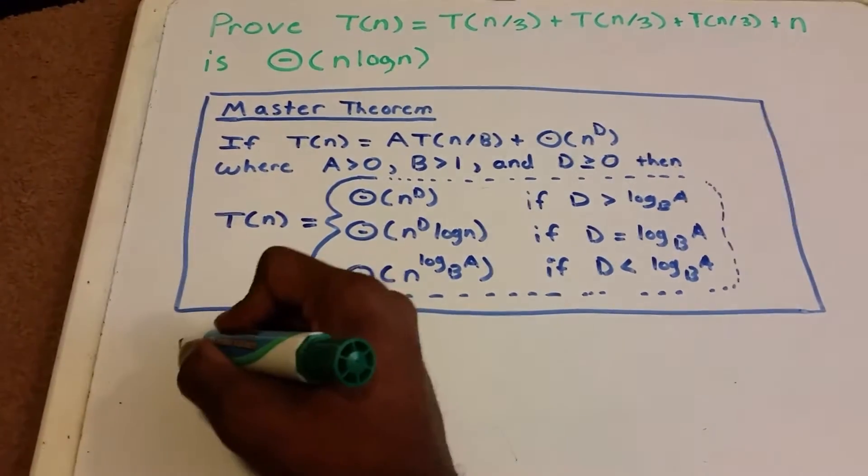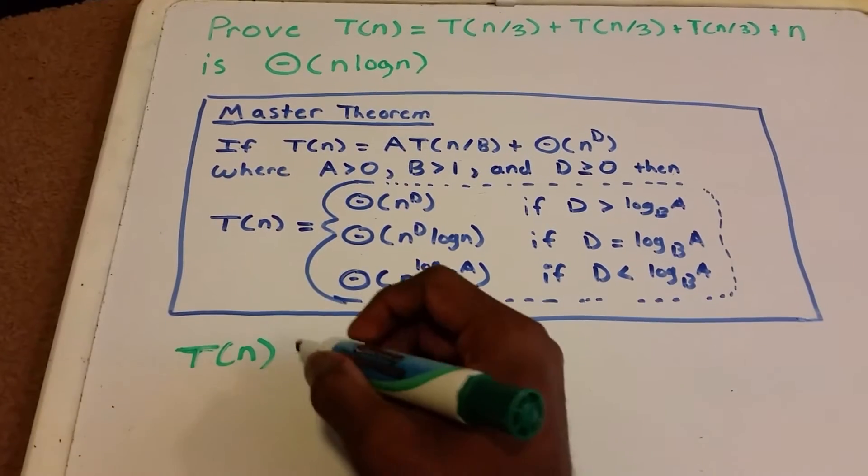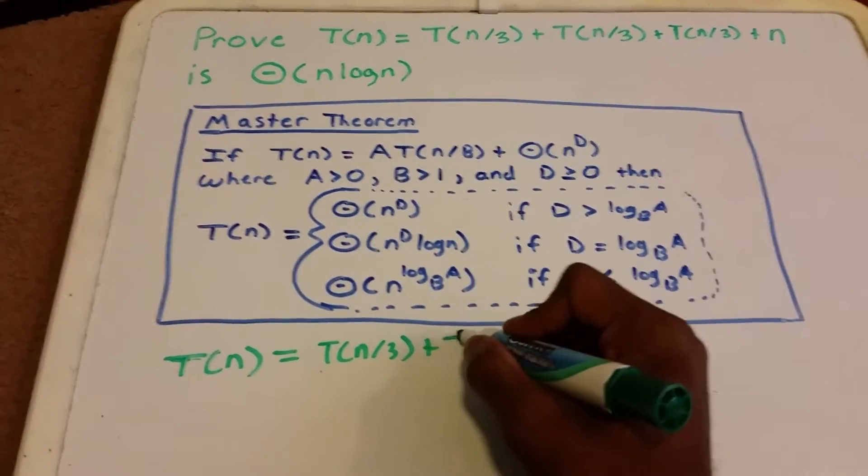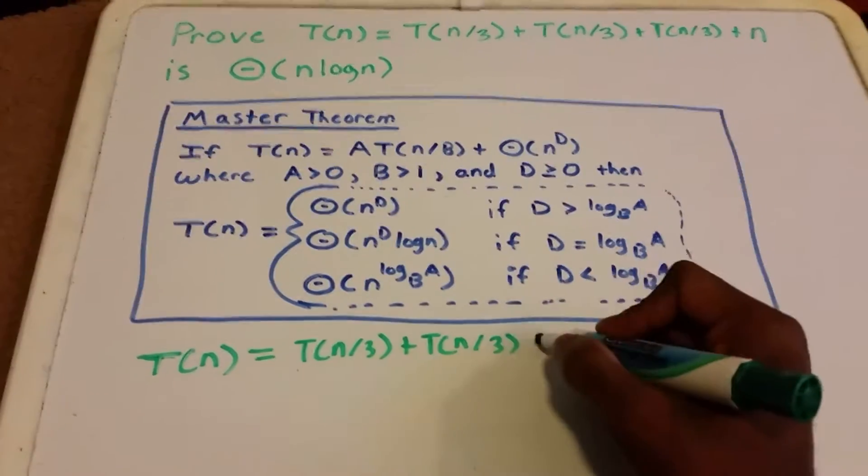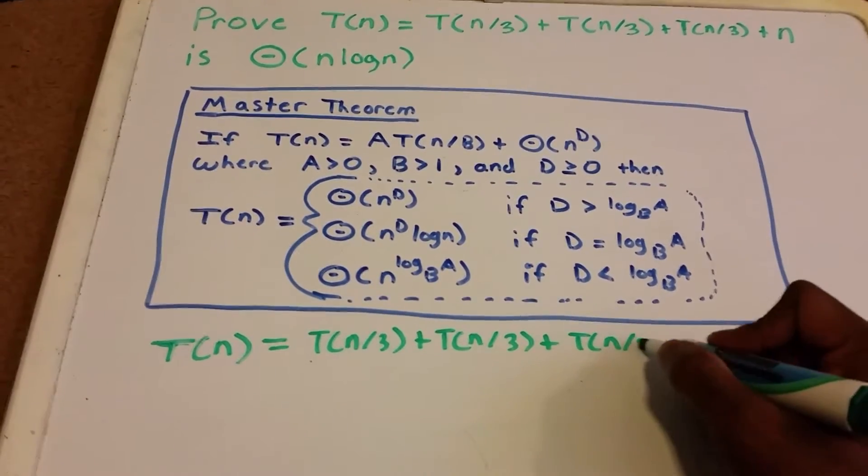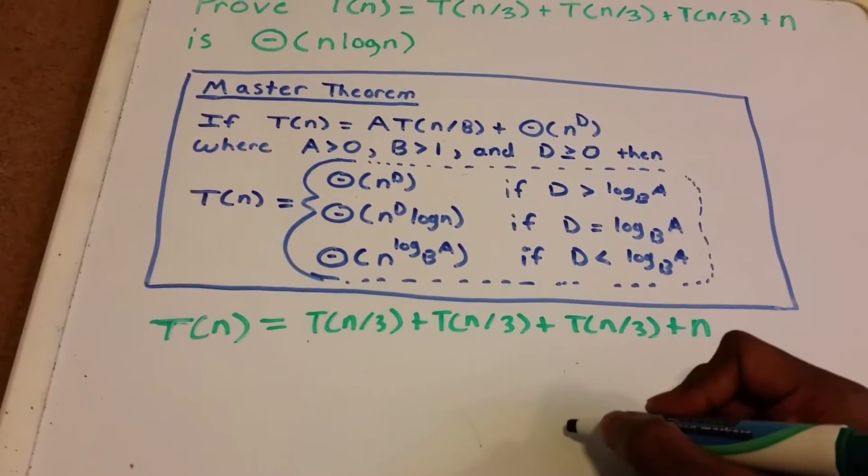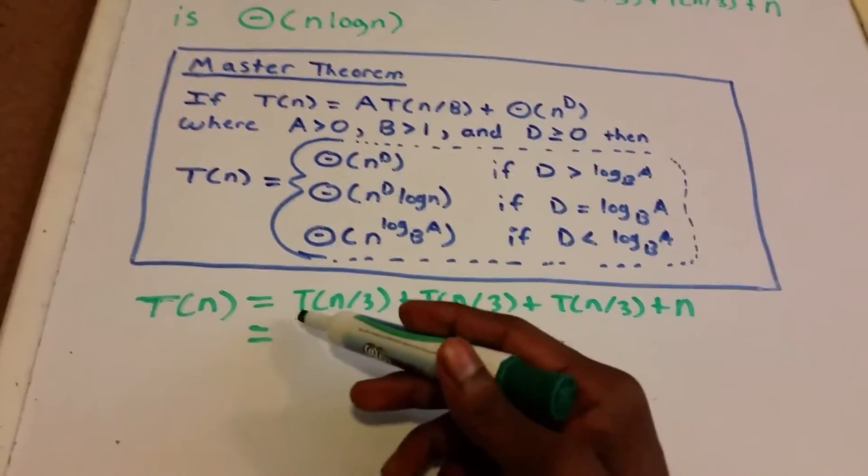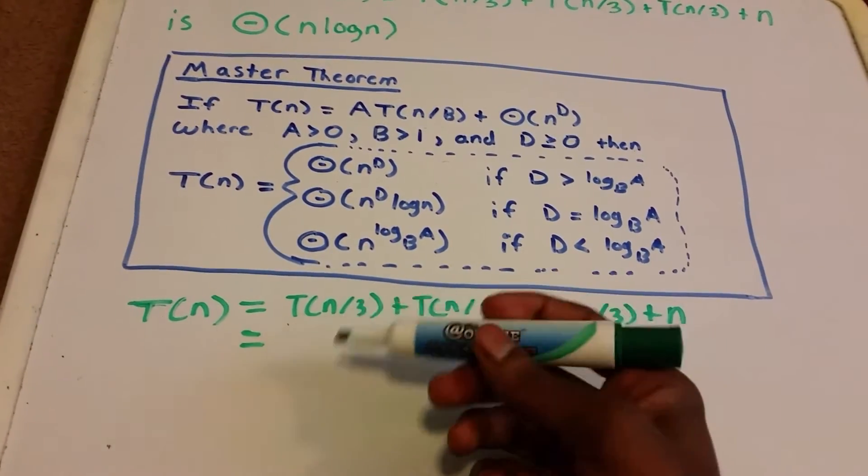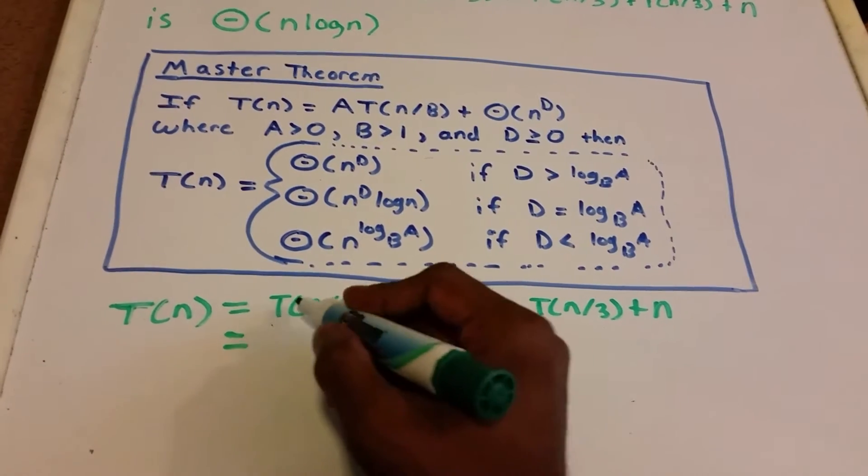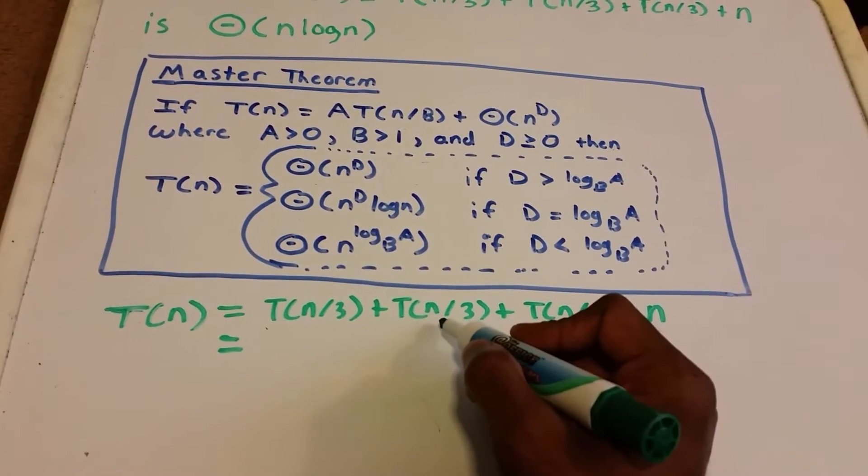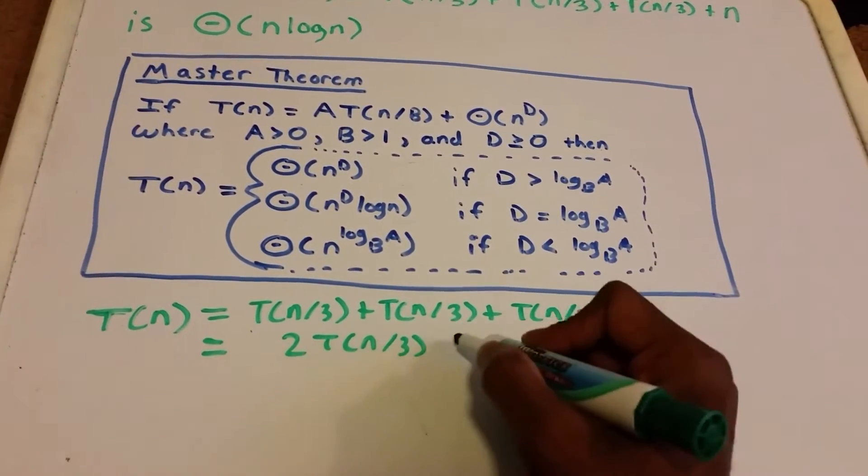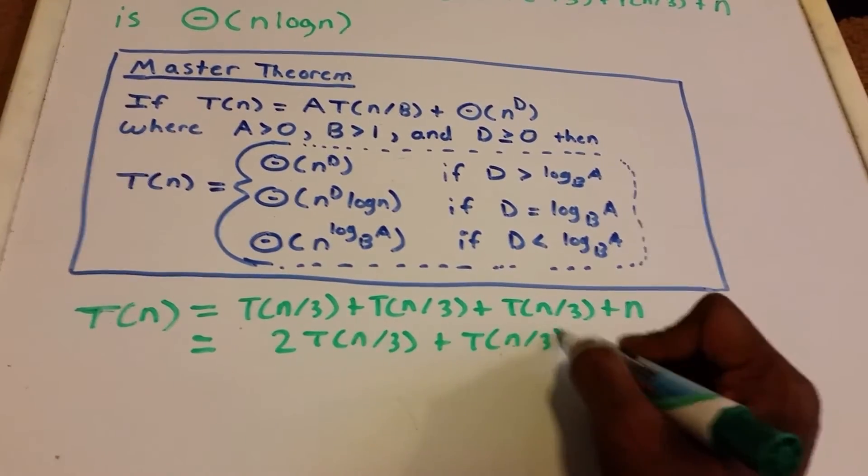Let's rewrite T(n) = T(n/3) + T(n/3) + n. If we think of T(n/3) as a function, we can combine the first two terms: T(n/3) + T(n/3) equals 2·T(n/3), giving us 2·T(n/3) + T(n/3) + n.